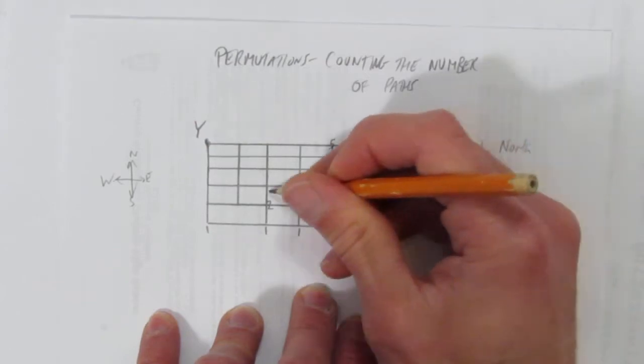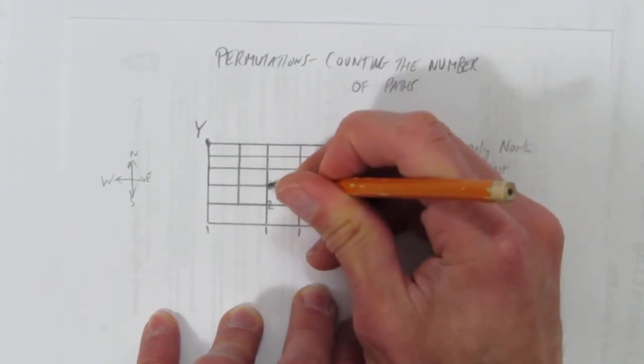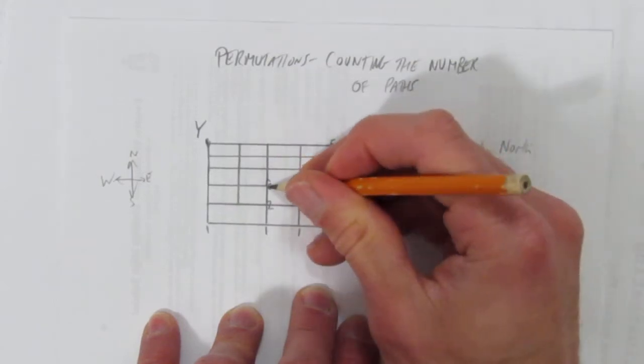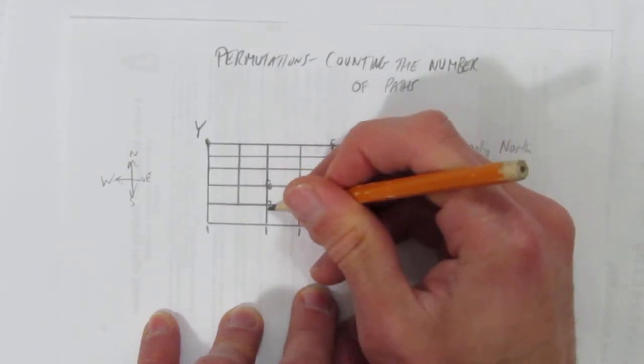This intersection was a four. This was a two. So here's a six. Again, the order is up to you. But don't do an intersection until you have the two corresponding ones before it.